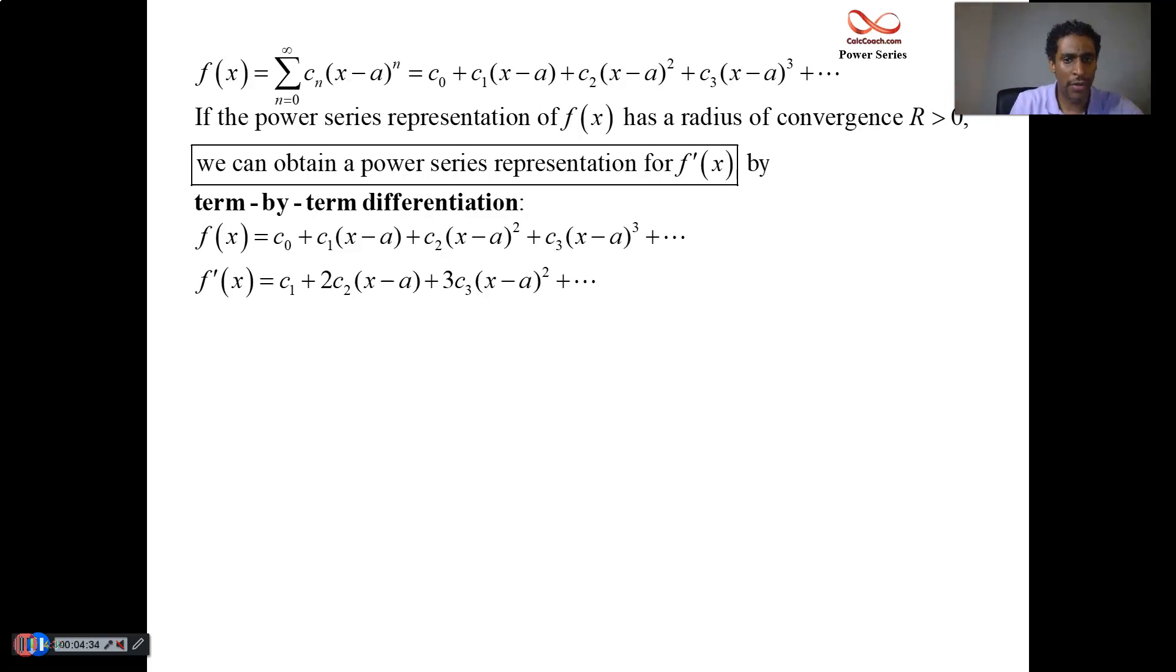When it comes to the power series, what happens is the derivative of a sum is the sum of the derivatives. You can bring it inside. C sub n's are constants. Bring down the n and take the x minus a to the n minus 1. Something subtle happened from the previous sum to the current sum that we're at. The previous sum started at zero while this current sum starts at one.